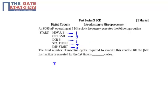So the total number of machine cycles is the sum of all those values: 1 plus 3 is 4, plus 1 is 5, plus 4 is 9, plus 3 is 12. So the total number of machine cycles is 12.